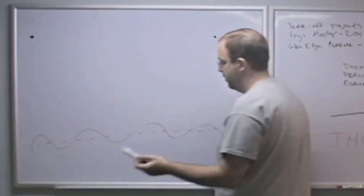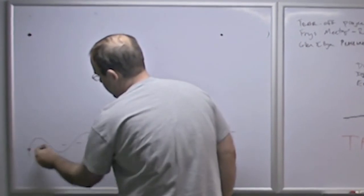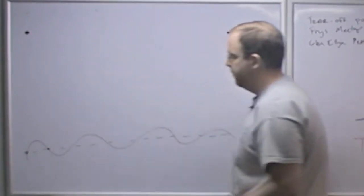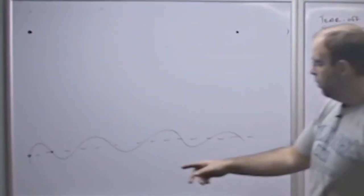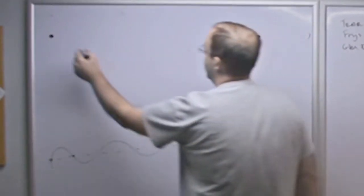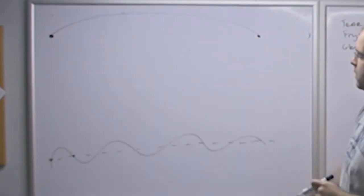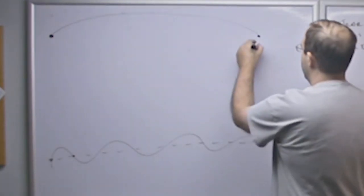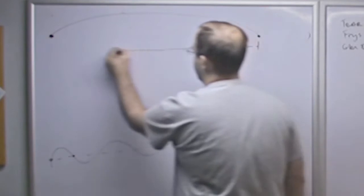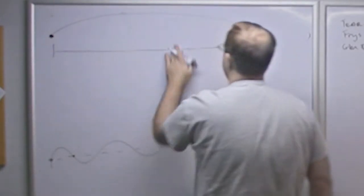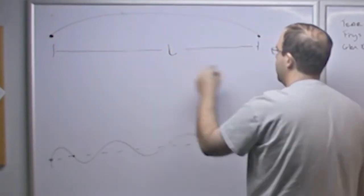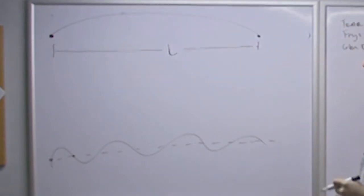So the lowest section is two nodes, essentially, and an anti-node in the middle. That would be our lowest resonance, where this is the distance, this is the length from the nut to the bridge.